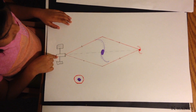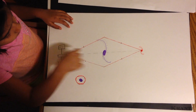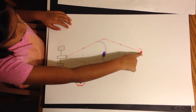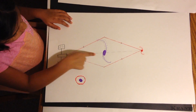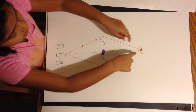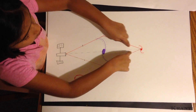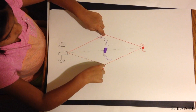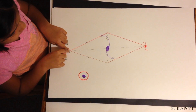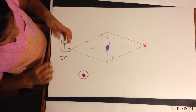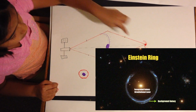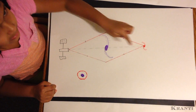When the telescope, gravitational lens, and background galaxy are all aligned perfectly, the light rays from the far galaxy will bend and reach the space telescope at the same time, and you will see an Einstein ring of the far galaxy.